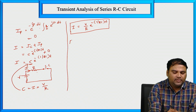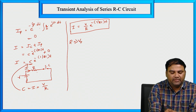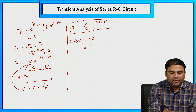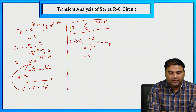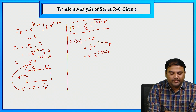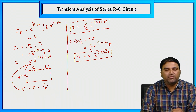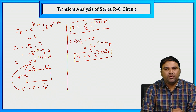Now we have to calculate the voltage drop across the resistor. VR equal to I into R. Substituting I equal to V by R into e to the power of minus 1 by RC into T, multiplied by R — R cancels — giving VR equal to V into e to the power of minus 1 divided by RC into T.